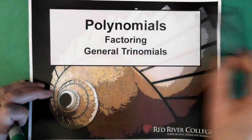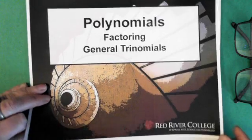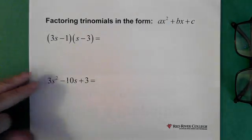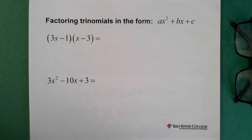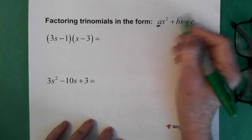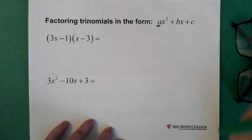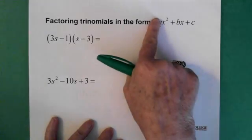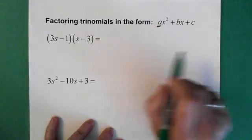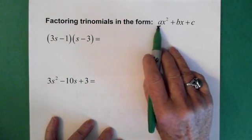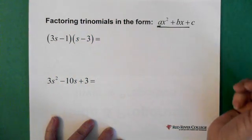Hi. Welcome to Wiseguys. This video is on factoring general trinomials. A general trinomial is a trinomial that has a constant in front of the x squared. The previous video had no number in front of the x squared. This video is going to be looking at a general trinomial.